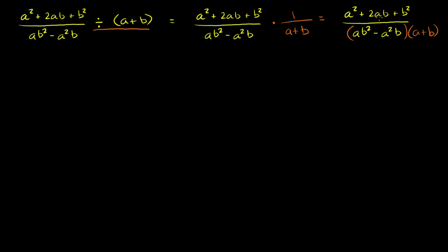This can be further simplified. Our numerator, a squared plus 2ab plus b squared — you might recognize that as a perfect square. Let me color code it. That numerator is the same thing as a plus b squared, or a plus b times a plus b, because you have a squared, b squared, and 2ab in the middle. Multiply it out if you don't believe me.